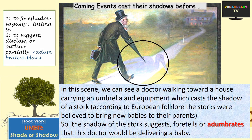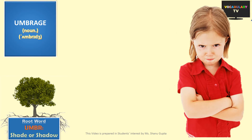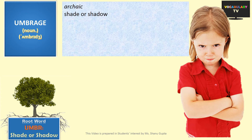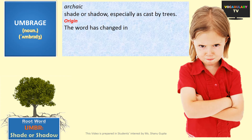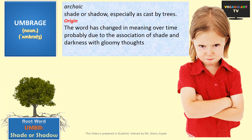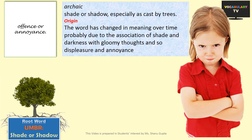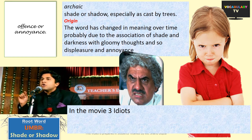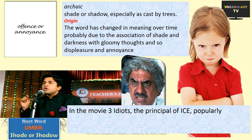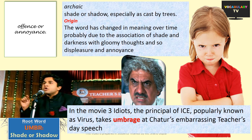Our next word is umbrage. This word has an interesting origin — it originally meant shade or shadow, especially as cast by trees, but that meaning is now obsolete. The word has changed in meaning over time, probably due to the association of shade and darkness with gloomy thoughts, which give rise to displeasure and annoyance. The word umbrage is thus used in the phrase 'to take umbrage at something,' meaning to take offence or annoyance at something. For example, can you recall the famous scene from the movie Three Idiots where the principal of ICE, popularly known as Virus, takes umbrage at Chatur's embarrassing Teacher's Day speech?